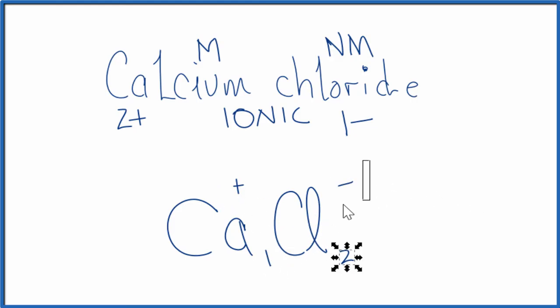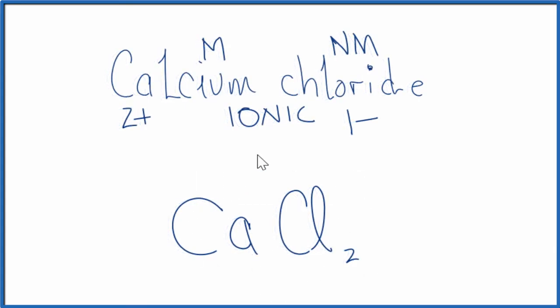the two here, get rid of this. And we don't write the one by convention. And the formula for calcium chloride is CaCl2. And remember, because we have a metal and a nonmetal, we had to deal with these ionic charges.